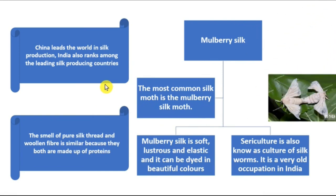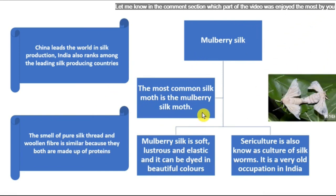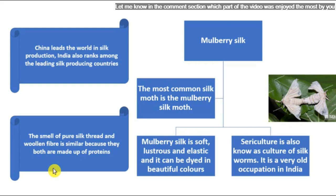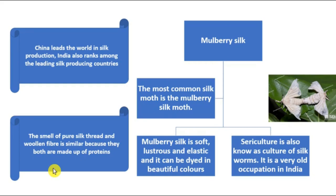The most common silk moth is the mulberry silk moth. Mulberry silk is soft, lustrous, and elastic and can be dyed into beautiful colors. Sericulture — also known as the culture of silkworms — is a very old occupation in India. China leads the world in silk production, and India also ranks among the leading silk-producing countries. The smell of pure silk thread and woolen fiber is similar because both are made up of proteins.